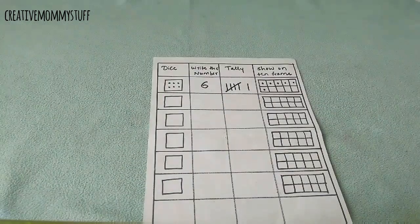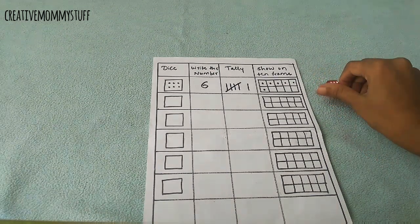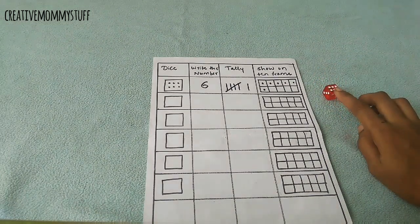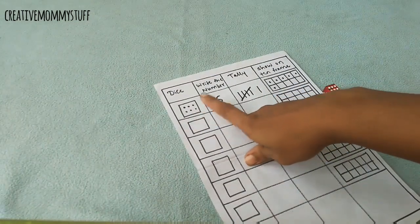Here we have the next activity. She has to throw the dice like this, and then it's six. So she has to first draw the dice, make it, and then write the number and then tally.